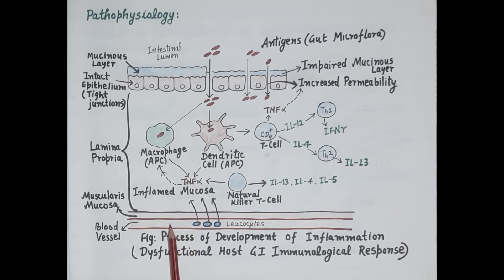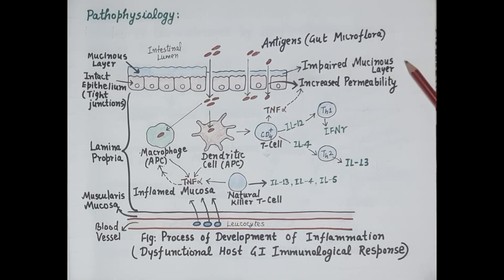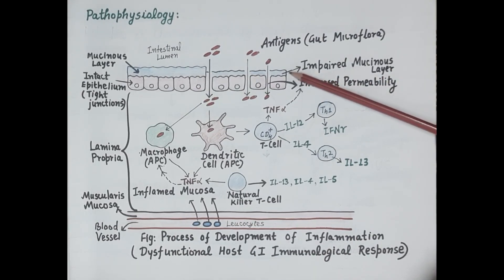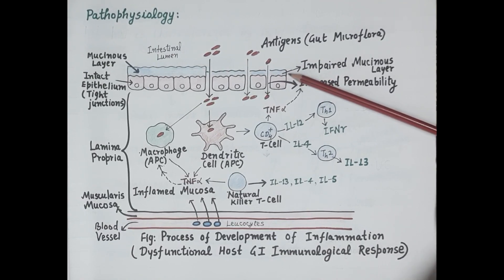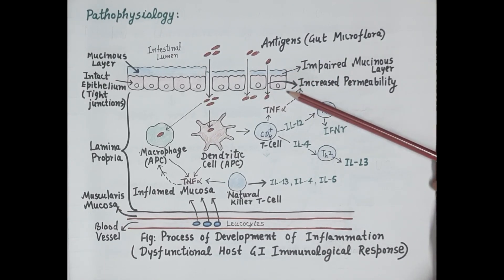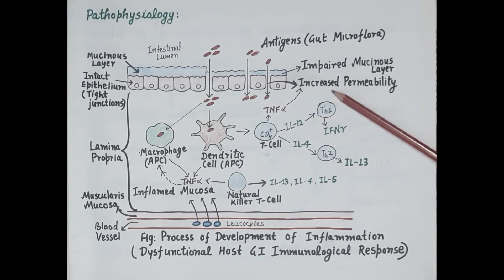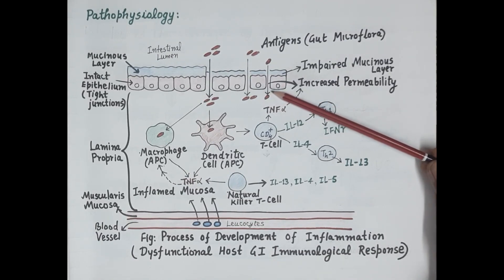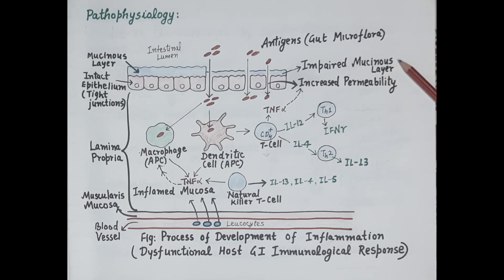In ulcerative colitis, there is impaired synthesis of the mucinous layer — it becomes thin. Because of the thinning of this mucinous layer, it is unable to protect the epithelial cells, causing increased intestinal permeability. There is also defective regulation of tight junctions — these tight junctions become loose because of the impaired mucinous layer.